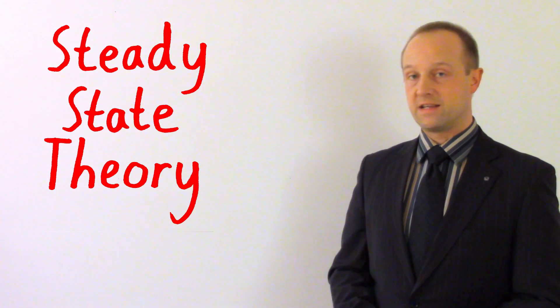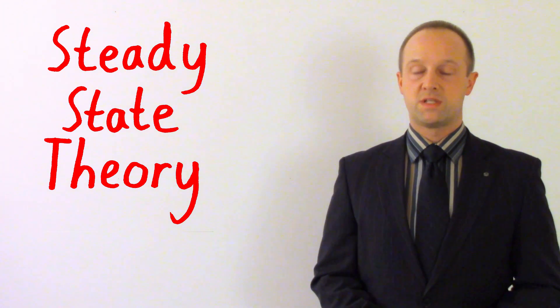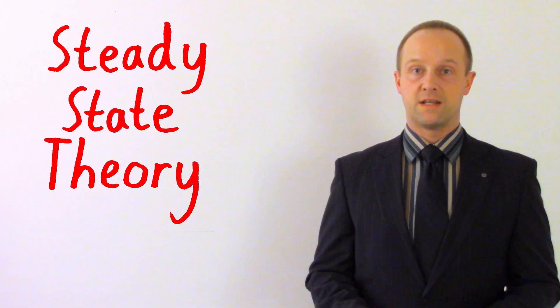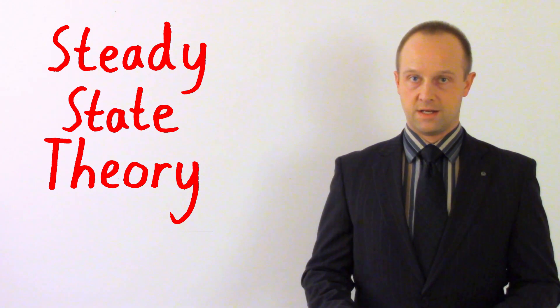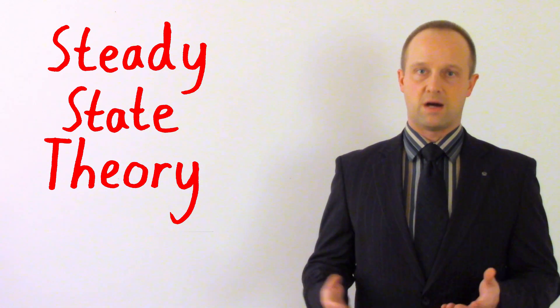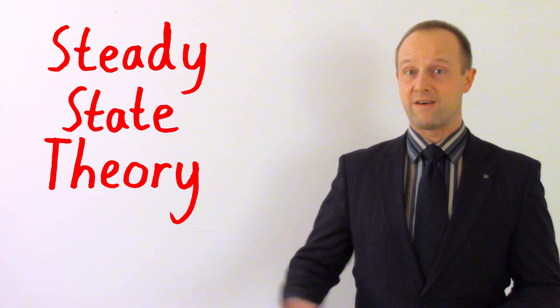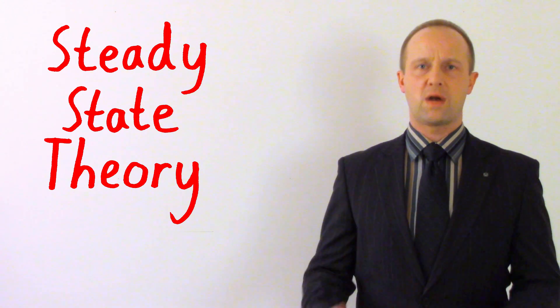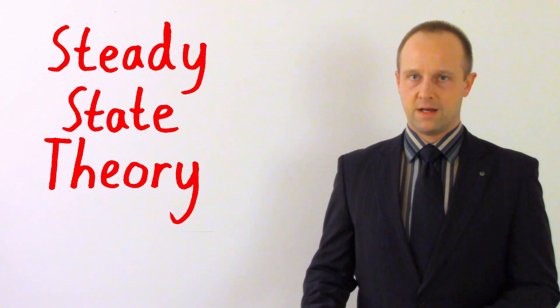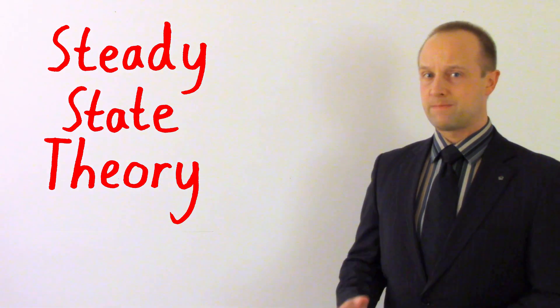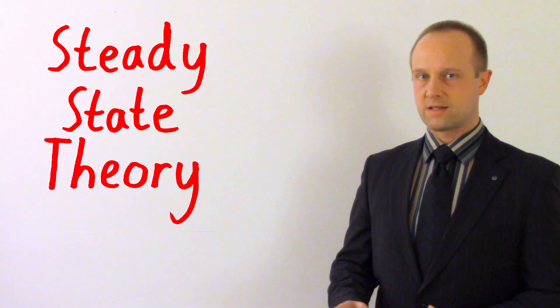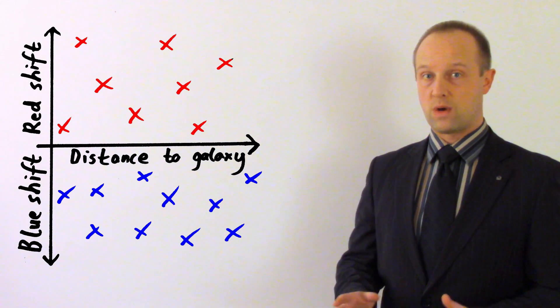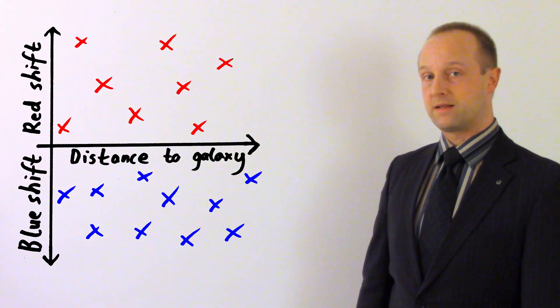What Hubble did was he took his data about how the light from distant galaxies was shifted and he plotted it against the distance to those galaxies. Now, this was relatively approximate. Obviously, we can't get out and measure how far away a galaxy is. So, there are some estimations going on there, but we've got a pretty good idea how far away galaxies are. What everyone expected, if the Steady State Theory was correct, was that the redshift of the light, when we plotted it against the distance, would give us a graph something like this.